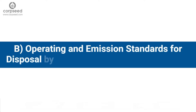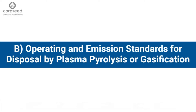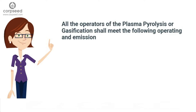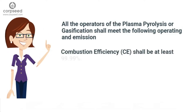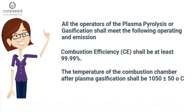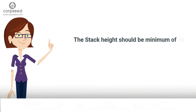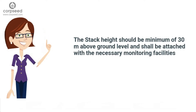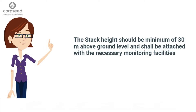Operating and Emission Standards for Disposal by Plasma Pyrolysis or Gasification: All operators of Plasma Pyrolysis or Gasification shall meet the following standards. Combustion Efficiency (CE) shall be at least 99.99%. The temperature of the combustion chamber after plasma gasification shall be 1050 ± 50°C with gas residence time of at least 2 seconds, with minimum 3% oxygen in the stack gas. The stack height should be a minimum of 30 meters above ground level, with necessary monitoring facilities as notified under the Environment Protection Act 1986 and in accordance with CPCB guidelines.